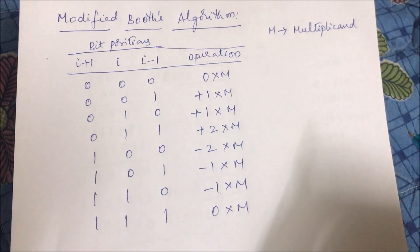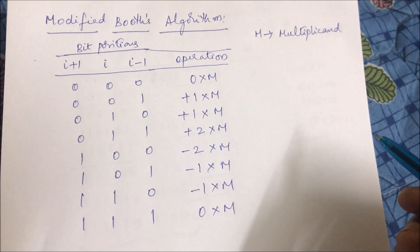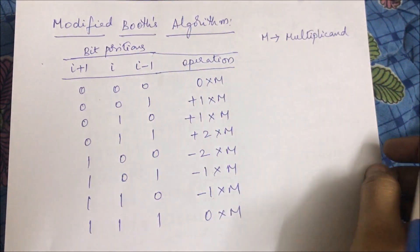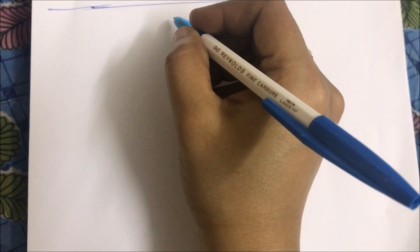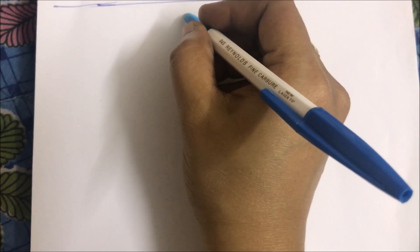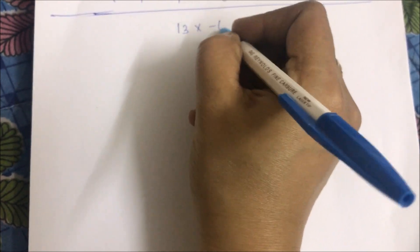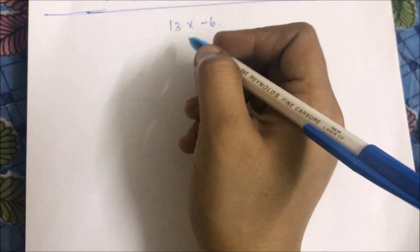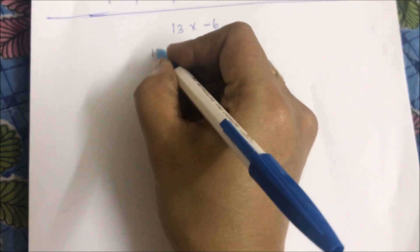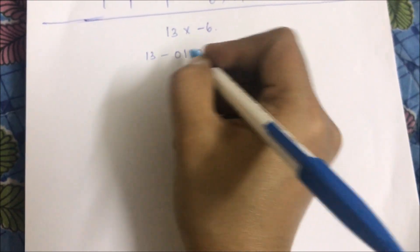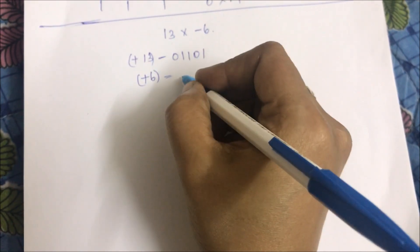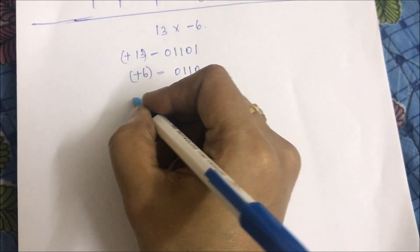We can easily remember this table. Here, m is the multiplicand. We are going to solve the problem 13 × -6 using Modified Booth's Multiplication Algorithm. First we represent the multiplicand and multiplier in 2's complement: +13 is 01101, and +6 is 0110, so -6 is obtained by complementing.